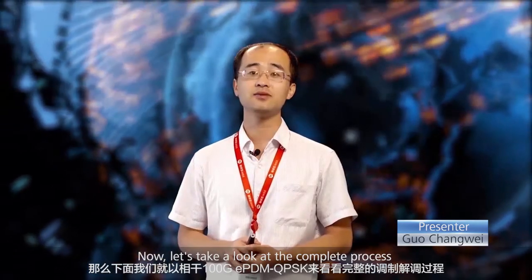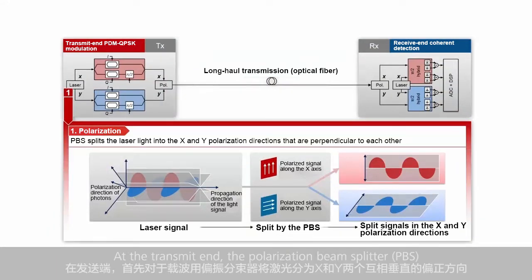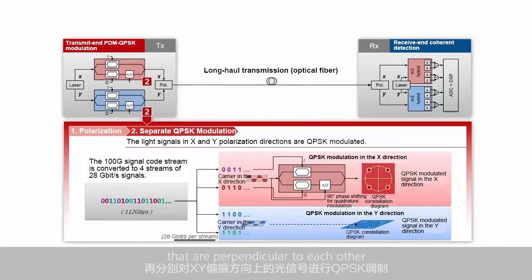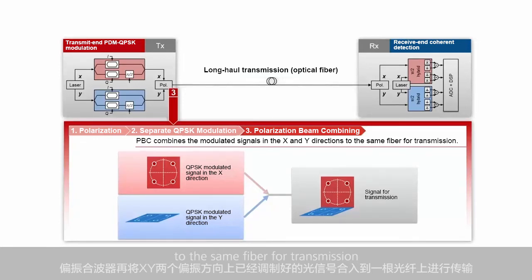Now let's take a look at the complete process of 100G ePDM-QPSK modulation and demodulation. At the transmit end, the polarization beam splitter splits the laser light into the X and Y polarization directions that are perpendicular to each other. Then the light signals in both polarization directions are QPSK modulated. Finally, the polarization beam combiner combines the modulated signals in the X and Y directions onto the same fiber for transmission.